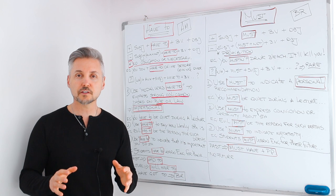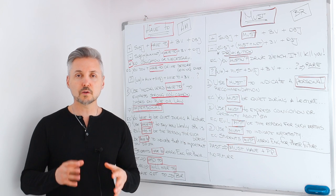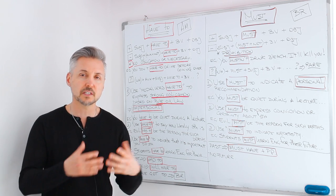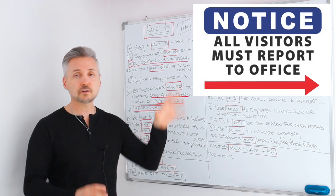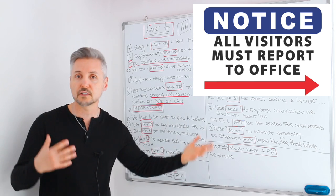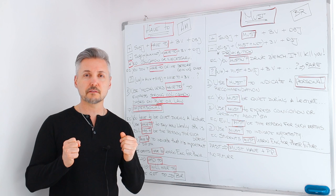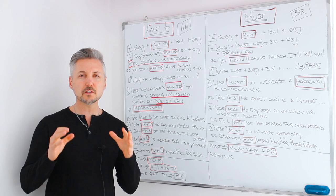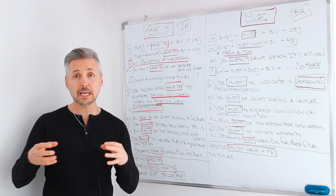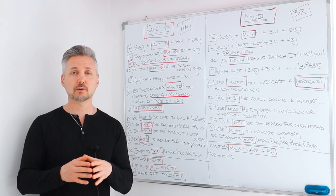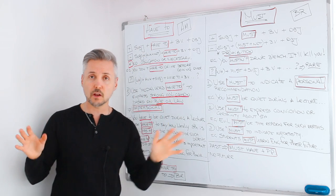Have to is used mostly in American English. Must is used also in American English, but on property signs — for example, you will see written: visitors must report to admission offices. Must is slowly disappearing from the language; it's 50% less used now than in the past. They're both modal verbs and they follow the following rules.